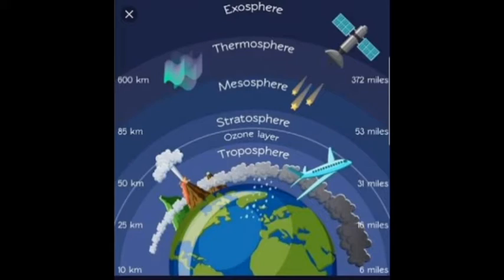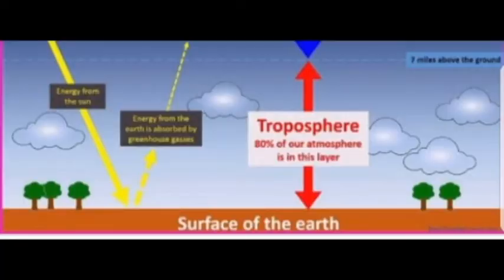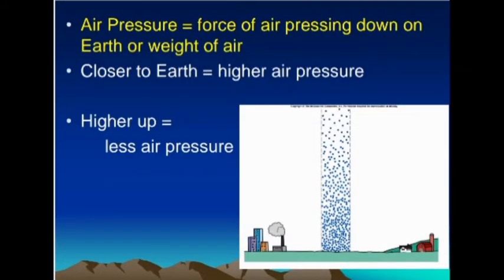About 80% of the atmosphere is found in the troposphere. It is very thick and consists of most of the oxygen, which is essential for all living beings. Air pressure is the pressure exerted by air on the surface of the Earth. Closer to the surface there is higher air pressure, and farther away there is less air pressure, so in this layer air pressure is highest.